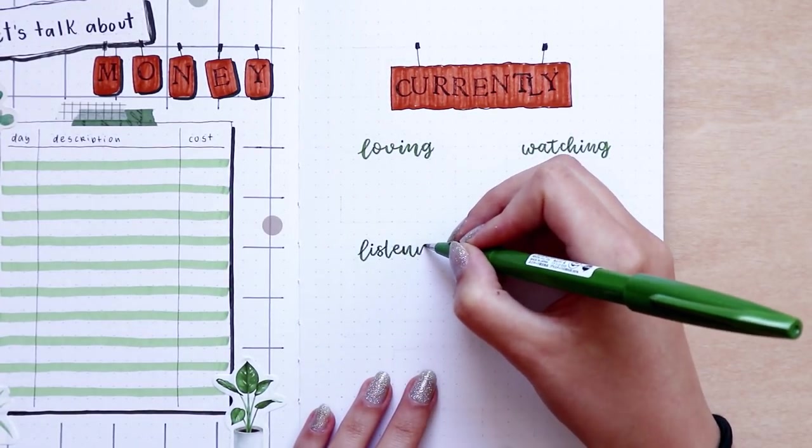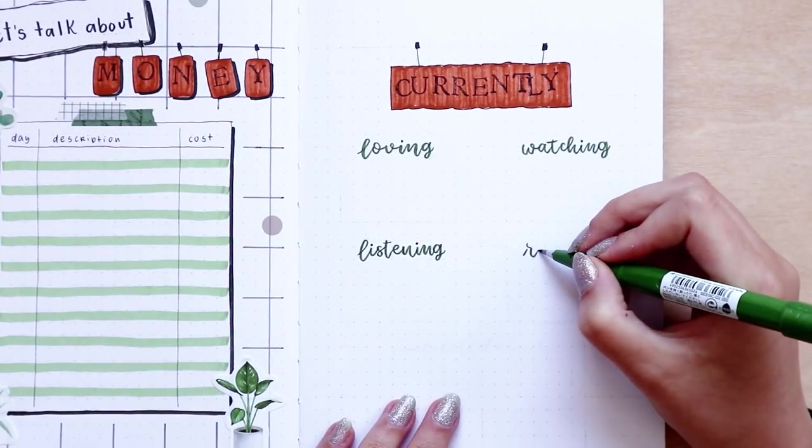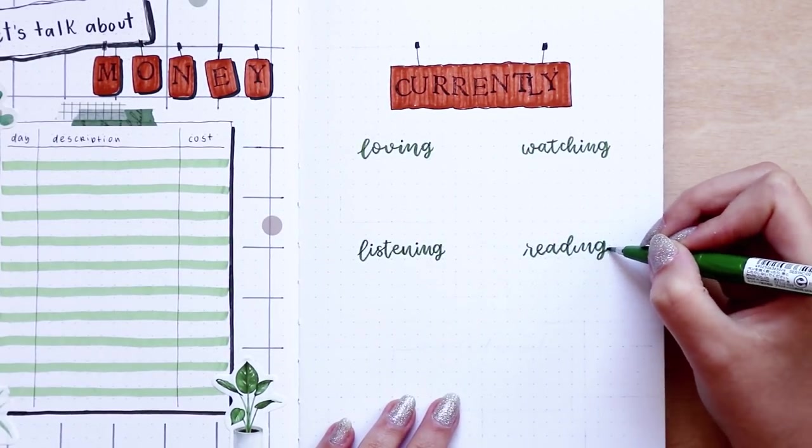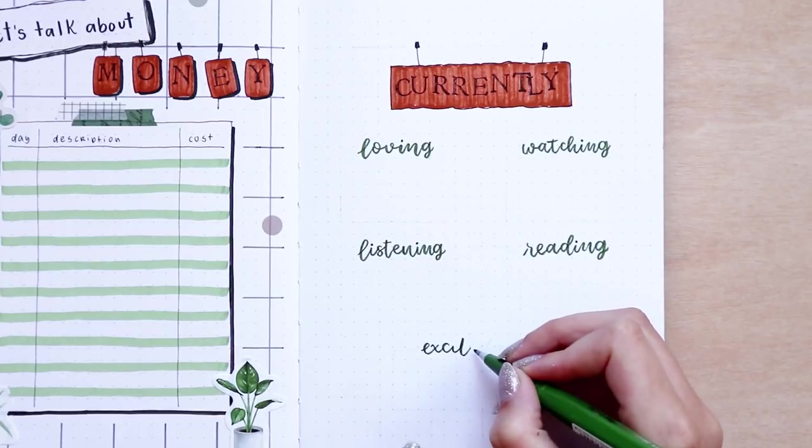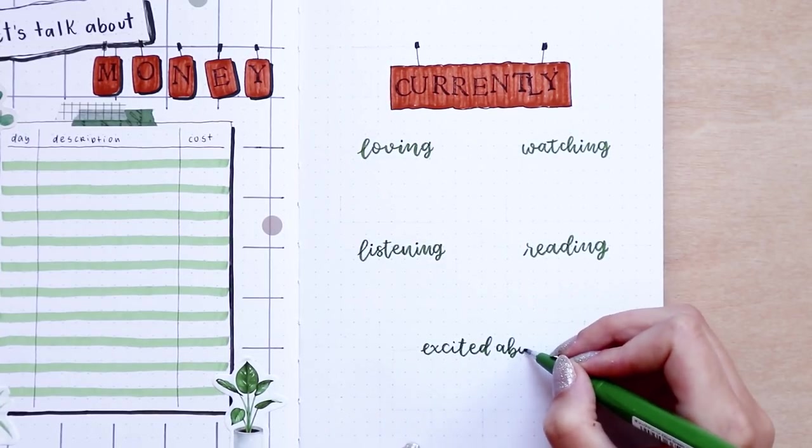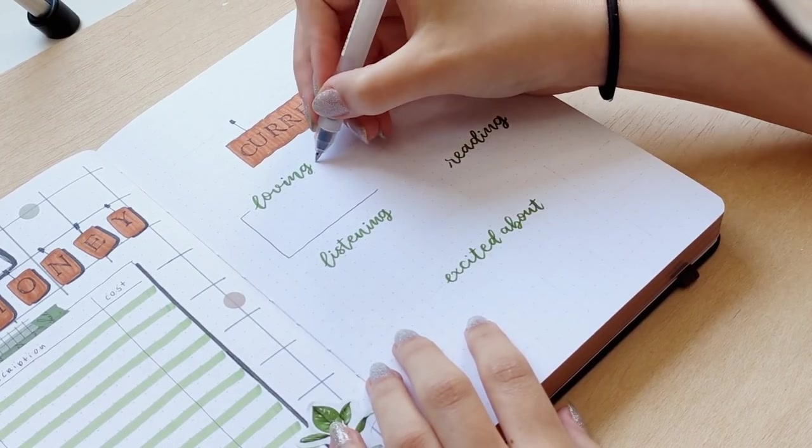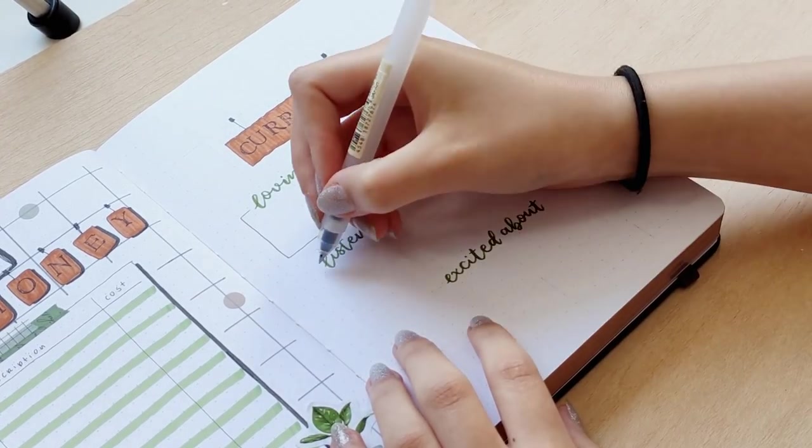I thought that this page would be really useful to just look back at it and see all the things that I was checking out in July. I did the spread in the same concept as my habit tracker, but I left the squares blank in order to, throughout the month, write things down.